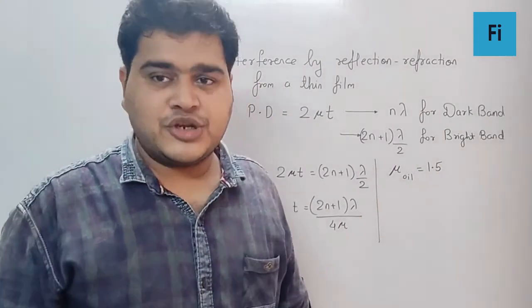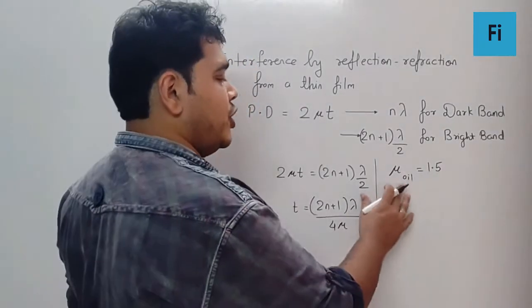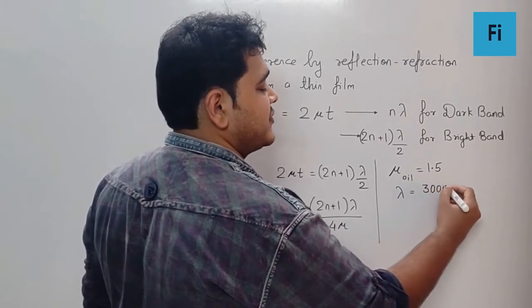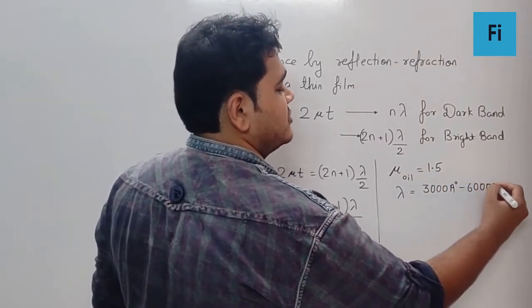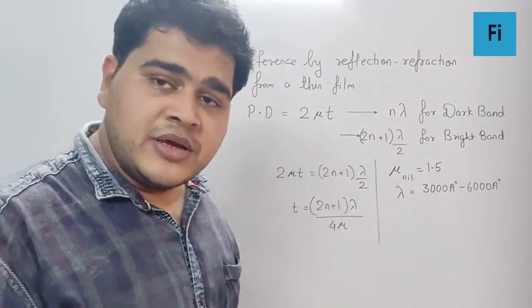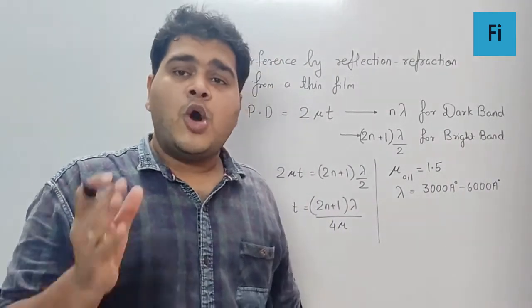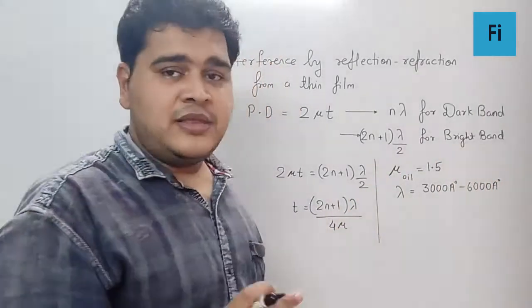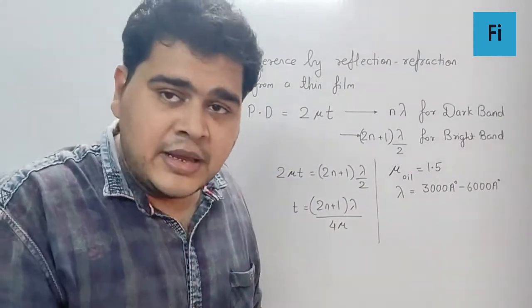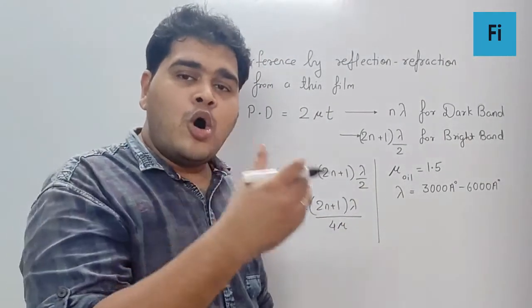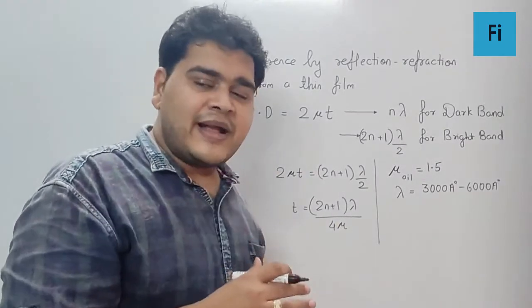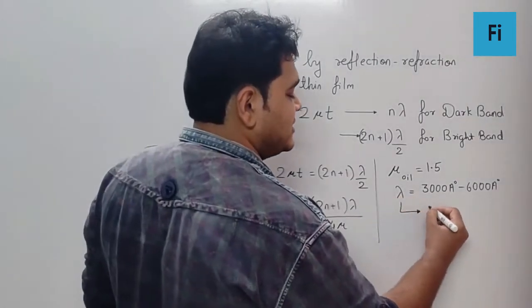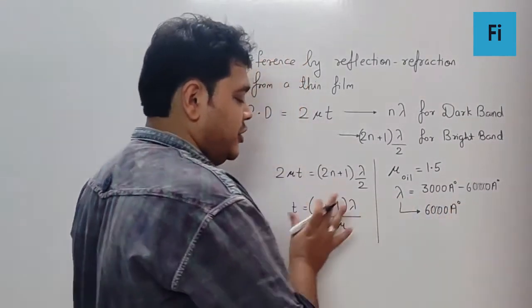And λ actually ranges from 3000 Å to 6000 Å. I'm sure you guys are aware of this. Now here definitely we want all the colors to be visible, which means if I take the maximum wavelength, which is the wavelength of red, if that color is going to be visible then all the other colors which are less than that will definitely be visible. That means I'm going to take λ as 6000 Å for this particular numerator.